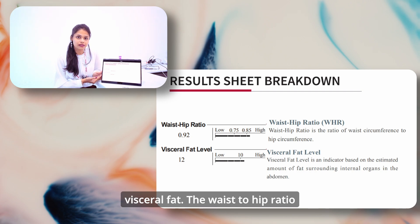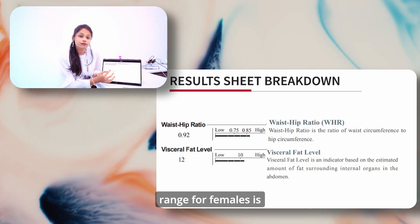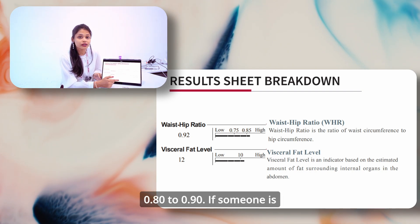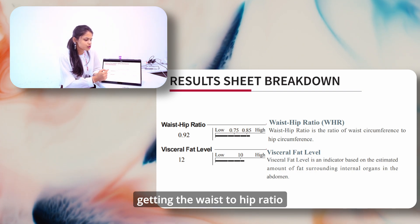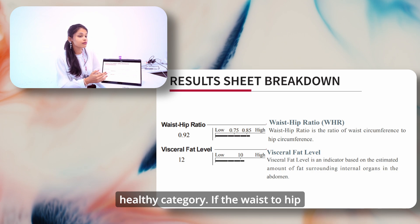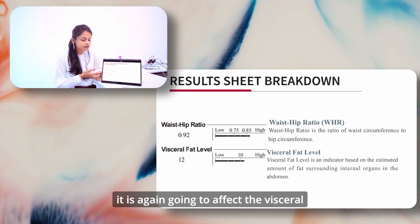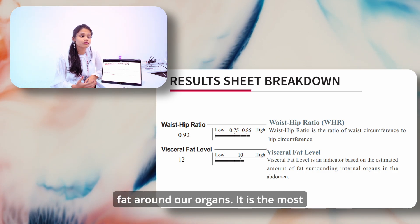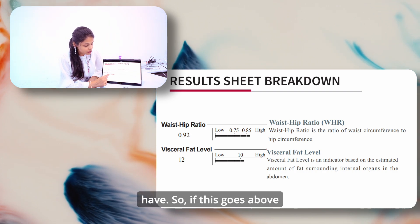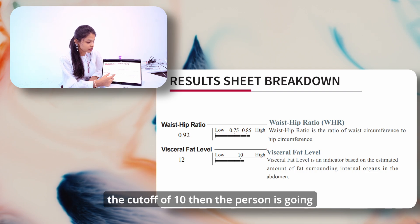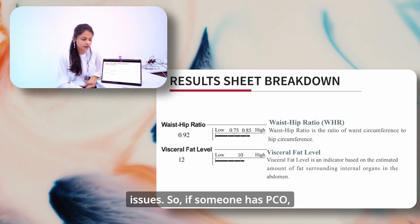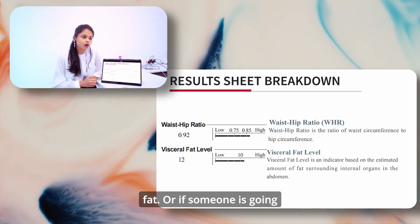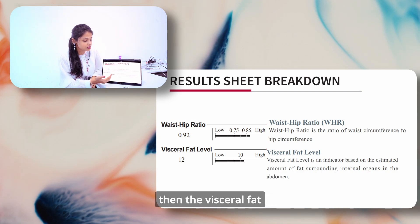Then we have waist to hip ratio and visceral fat. The waist to hip ratio range for females is 0.75 to 0.85, while for males it is 0.80 to 0.90. If the waist to hip ratio is within this range, the person is in the healthy category. If it goes higher, it is going to affect the visceral fat level. Visceral fat is the fat around our organs and is the most dangerous kind of fat. If visceral fat goes above the cutoff of 10, the person will have some issues. Conditions like PCOD, PCOS, or diabetes are associated with high visceral fat levels.